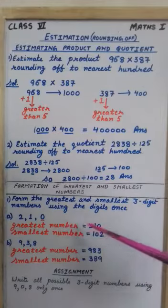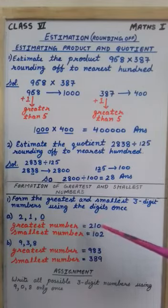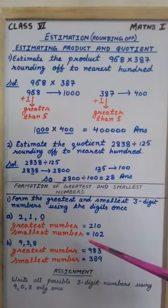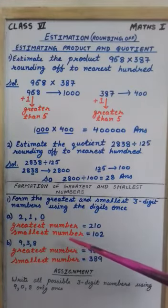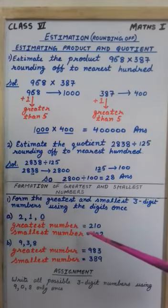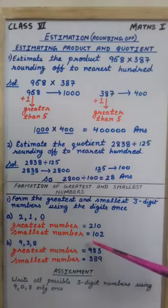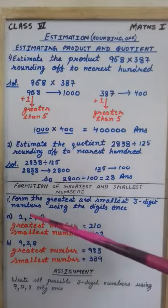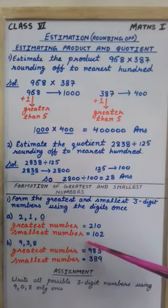So the greatest number is 210. Now let's talk about smallest number. Remember this that whenever we are writing smallest number, 0 cannot come in the first place. Why? Because then it will become a 2 digit number. That's why 0 should be there after the first digit.